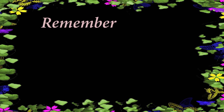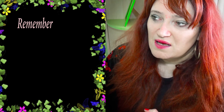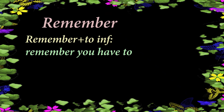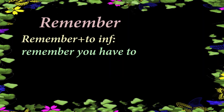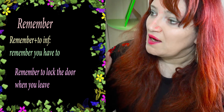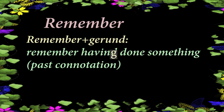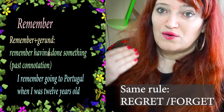With the verb 'remember,' both forms are possible but there is a slight change in meaning. 'Remember' plus to-infinitive is when you remember that you have to do something — it has a future projection. For example: 'Remember to lock the door when you leave.' Whereas 'remember' plus the ING form is when you remember something you have already done — it has a past connotation. For example: 'I remember going to Portugal when I was 12 years old.'